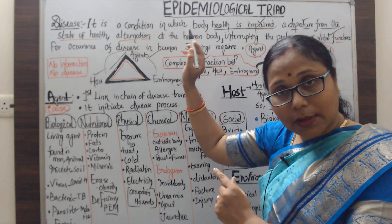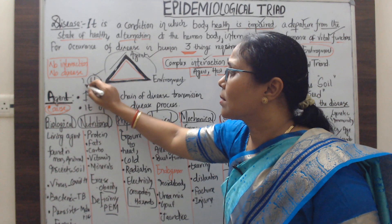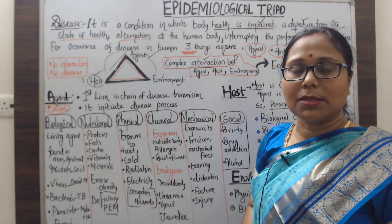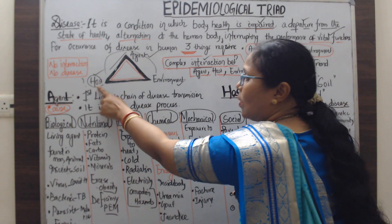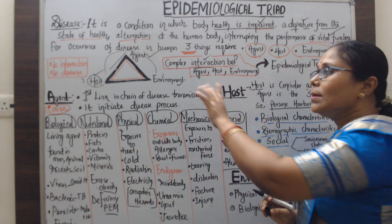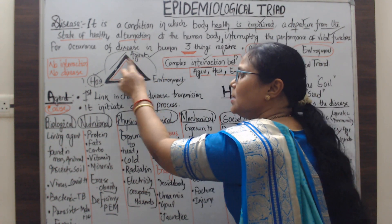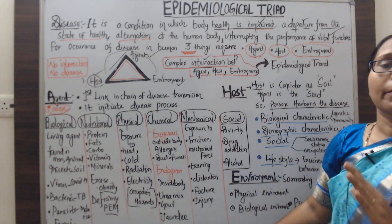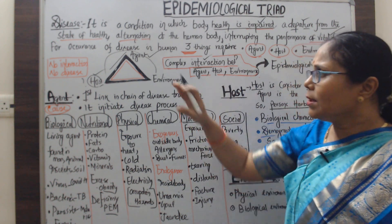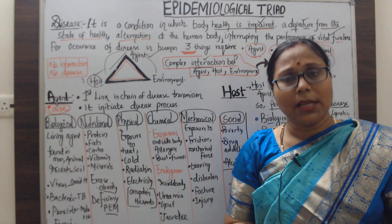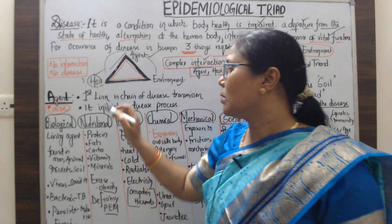In certain environmental conditions, due to a causative agent, a person's health condition changes to a disease condition — that is the epidemiological triad. By the interaction of agent, host, and environment, a disease will occur; if there is no interaction, there is no disease. This is an important topic in epidemiology. Now we discuss each component: what is the agent, what is the host, and what is the environment.